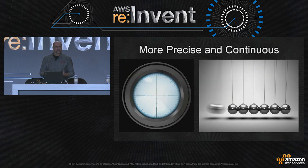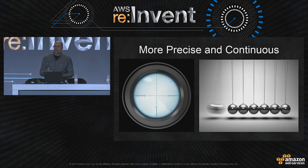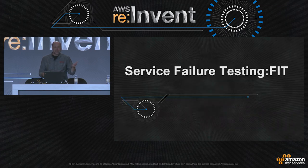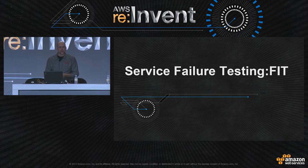For our next-generation system, which Naresh is going to talk about, we really want two things: a precision instrument that allows us to test functional things separate from scale, and the ability to run it continuously without worrying about the effect on our production environment and customers — so that as things change, we can detect those changes. So now I'm going to hand it over to Naresh, and he'll go into that next-generation technology.